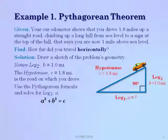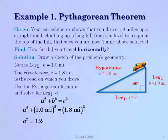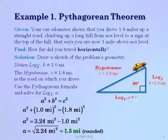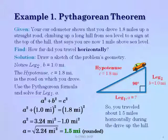We have A squared plus B squared equals C squared. Substituting in the values for B and C and squaring them, we subtract the 1 mile squared from the right side, giving us 3.24 square miles minus 1 square mile, which is 2.24 square miles. Taking the square root of both sides, we find that A is 1.5 miles. So we travel 1.5 miles horizontally to get to the top of that hill.